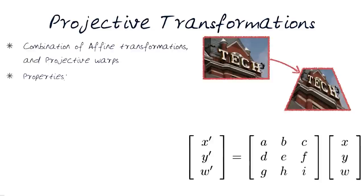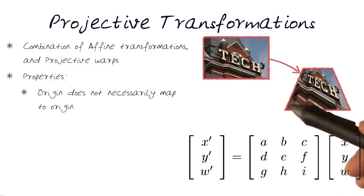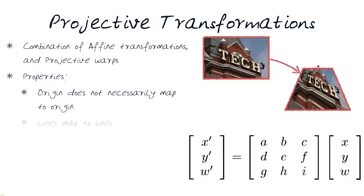Properties of that form of transformation: the origin does not necessarily map to the origin. We can see that this could have transformed or translated over to this point. But the lines are still straight lines. Lines map to straight lines here.